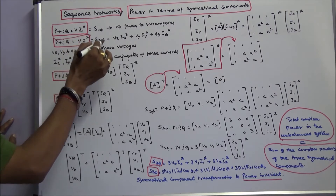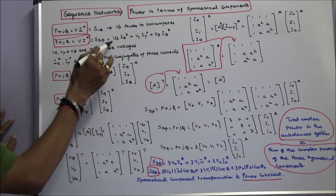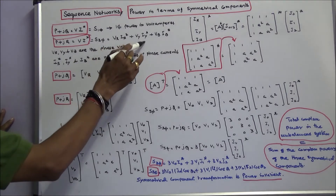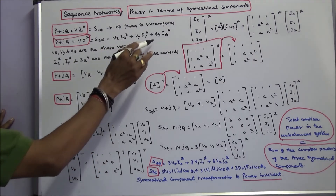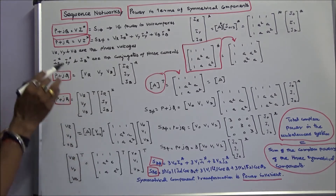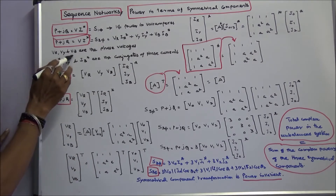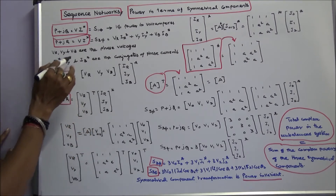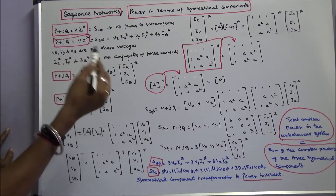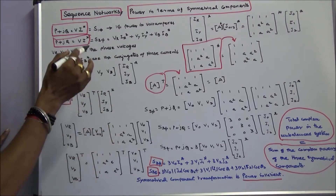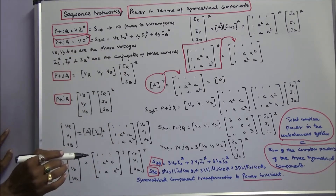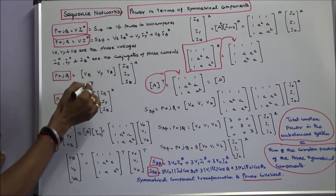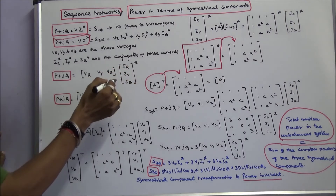Three-phase apparent power is equal to VR times IR conjugate, plus VY times IY conjugate, plus VB times IB conjugate, where VR, VY, and VB are the phase voltages, and IR, IY, IB conjugates are the conjugates of the phase currents. So P plus jQ equals the phase voltage matrix multiplied by the conjugate current matrix.